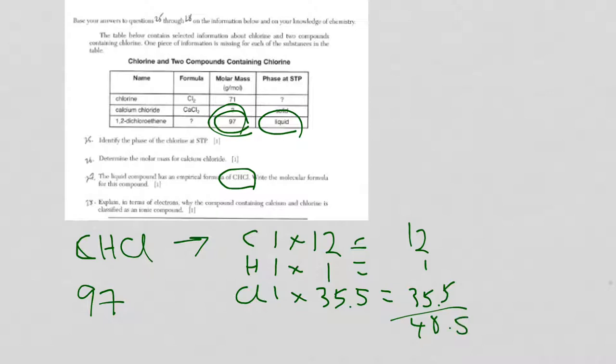In step two, I'm going to take my gram-formula mass, divide it by the gram-formula mass for the empirical formula, I'm going to plug it in my calculator, and I get 2. So, what that means is I'm going to take the empirical formula, and I'm going to multiply the subscripts, which are 1s, by 2. So, it's C2, H2, and Cl2. And that's my molecular formula.